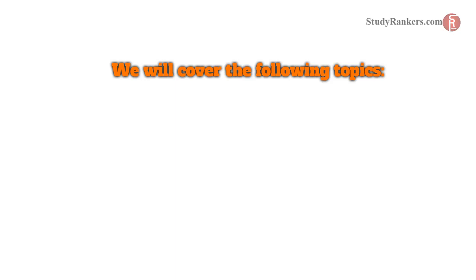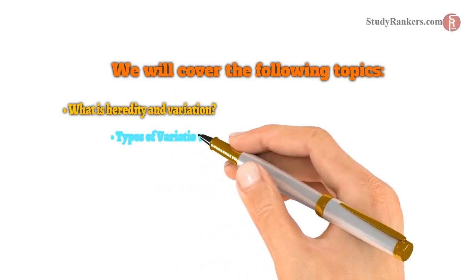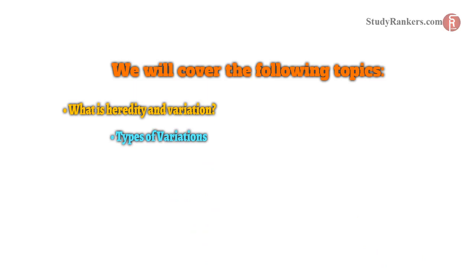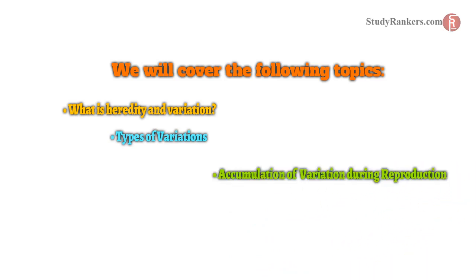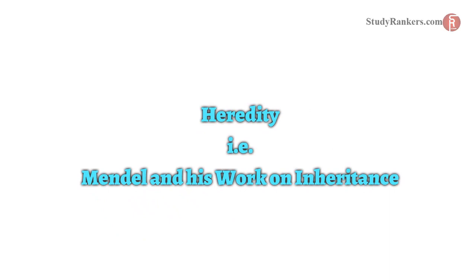First, we will know what is heredity and variation. After that, we will know about types of variation. After that, we will learn about accumulation of variation during reproduction. We will also study about important terms. The video mainly helps in study about heredity, i.e., Mendel and his work on inheritance with their experiments in detail. So, let's start with our first topic.